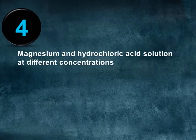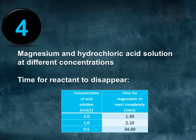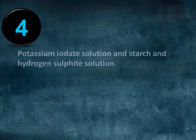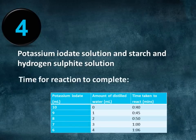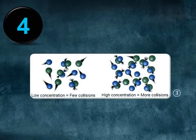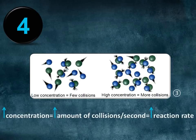The dependence on the rate of reaction on the concentration of reactants was investigated by the reaction of magnesium and hydrochloric acid solution of different concentrations. The reaction of potassium iodate solution and starch and hydrogen sulfite solution was observed by changing the concentration of potassium iodide with distilled water. Both reactions slowed when the concentration was decreased. The collision theory states that the rate of a reaction is dependent on the frequency of collisions. Increasing the concentration of the reactants increases the amount of collisions per second and therefore increases the reaction rate.